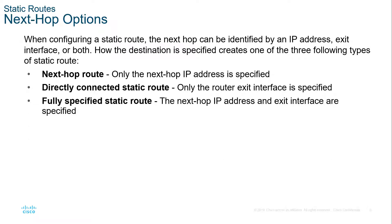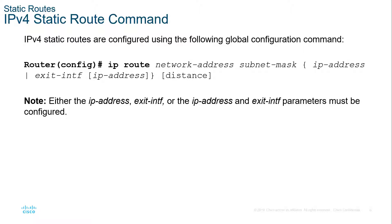When configuring a static route, we also have to look at next hop — where is it going? The next hop can be identified via IP address, via a directly connected interface, or we can do a fully specified static route using both next hop IP and exit interface. So: IP route, the network address, the subnet mask, and where we want to send it — either the IP address or the exit interface. We can also set an administrative distance if we want to, which is what we use for floating routes.